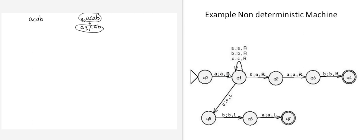Now we are at Q1, and we have three options because we are reading C. C at Q1 has three different transitions. The first transition reads C, replaces it with C, and moves to the right while staying at Q1. So the configuration is A, C, Q1, A, B.